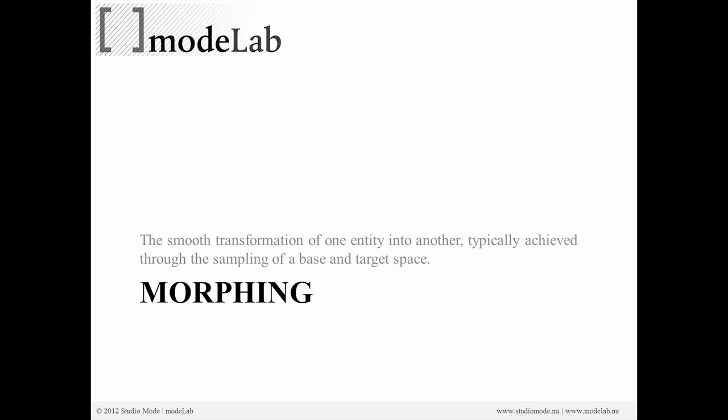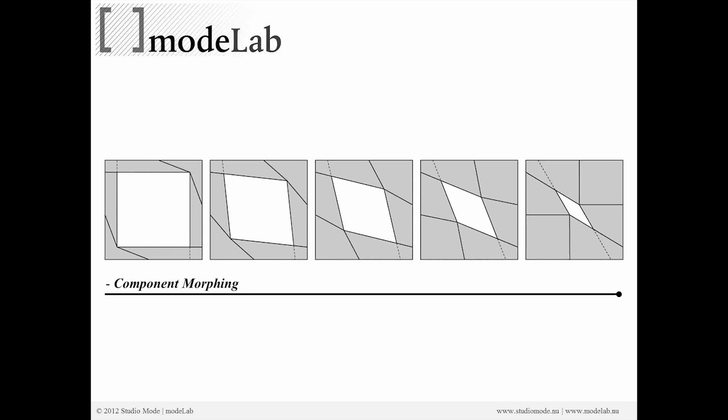We'll see how that plays out in a couple of different examples. This is a typical example of simple component morphing, transitioning from the left to the right. What you see in the middle is really a series of transformations or steps as you move from the left over to the right.